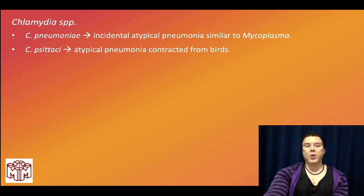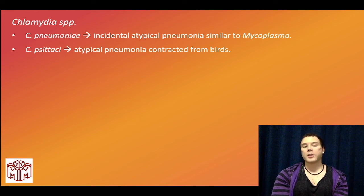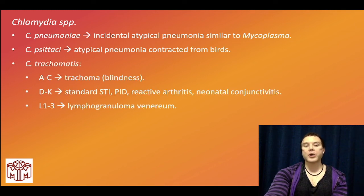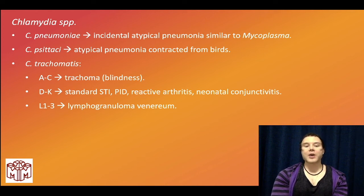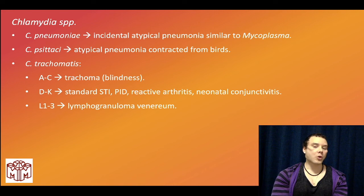Chlamydia pneumoniae is not the STD — it's a cause of atypical pneumonia, similar to Mycoplasma and Legionella. Chlamydia psittaci is an atypical pneumonia contracted from birds — a bird owner or pet shop owner. Chlamydia trachomatis D through K is our STD — standard penile/vaginal discharge, pelvic inflammatory disease where no organisms are grown from the discharge; that's classically Chlamydia.